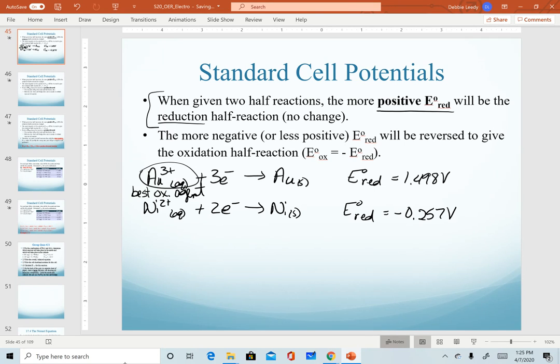The statement that's mentioned up here—the first bullet—that the more positive reduction potential, that is the gold half reaction, will remain as the reduction half reaction. That's because gold ion is easier to reduce as the best oxidizing agent.